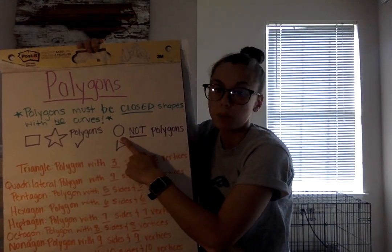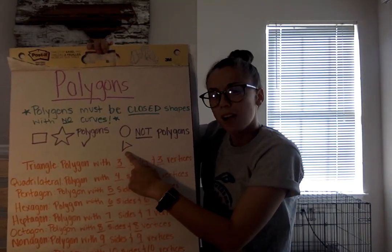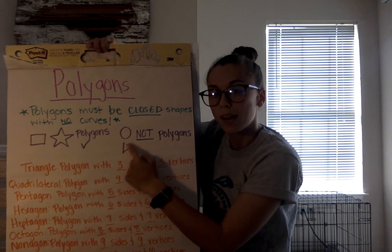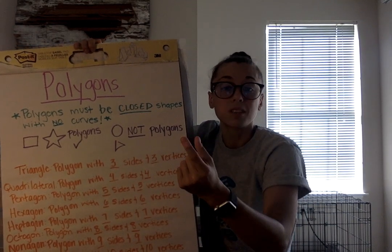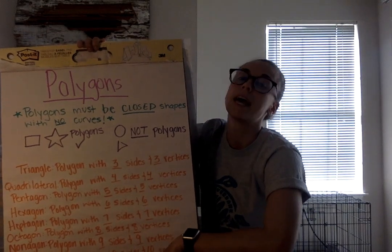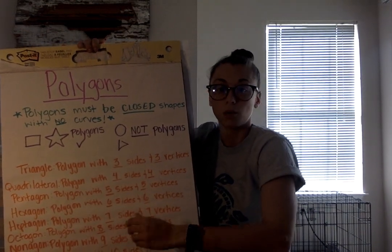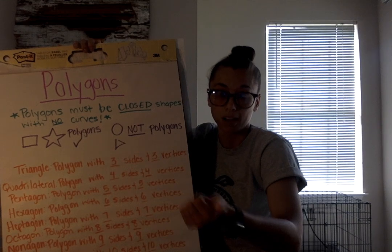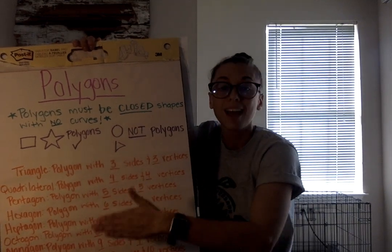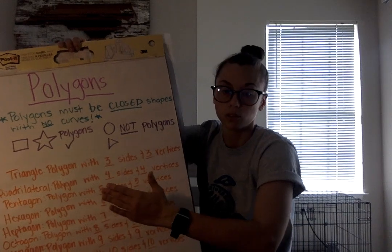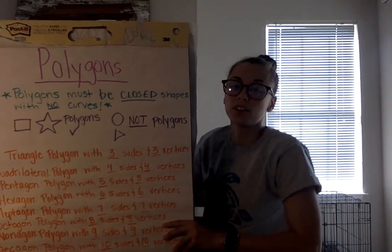And we have this shape that's almost like a triangle, but up at the top it is not closed — those sides are not touching — which means it cannot be a polygon. So in order for it to be a polygon, it has to be a closed shape with all sides touching, and there are no curves. They have to be straight lines.